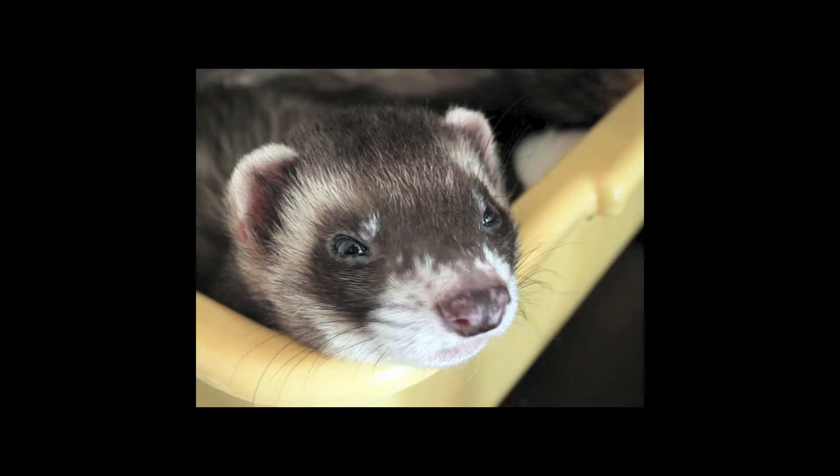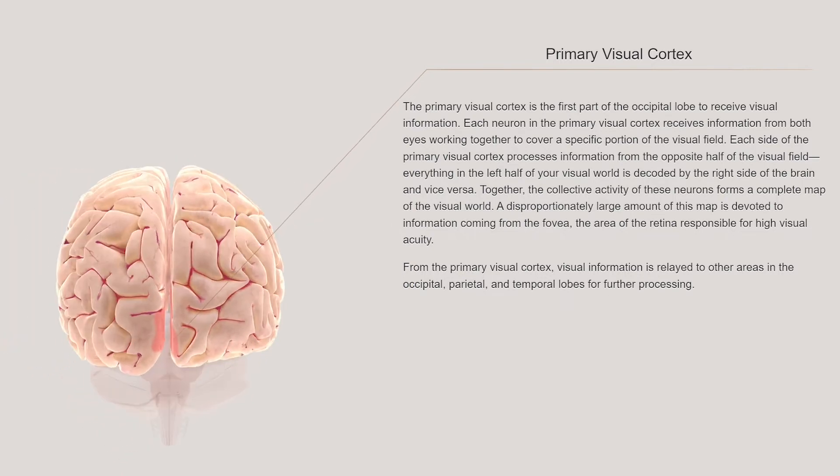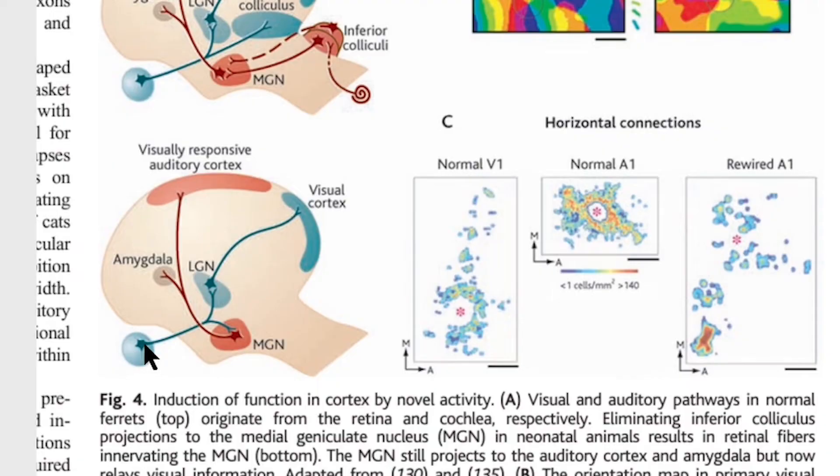Now, what about something less trivial than handedness? Can you rewire your brain to hear with your eyes or see with your ears? To address this question, I want to talk about an experiment carried out on ferrets by MIT researcher Mriganka Sur. He wanted to know if the visual cortex — the part of the cerebral cortex devoted to processing vision — was intrinsically devoted to vision, or if it processed visual information only because that was the type of information it received. Specifically, if you re-routed the nerve going from the eyes through the thalamus to the auditory cortex, would the auditory cortex develop to process visual information and allow the ferrets to still see? The answer appears to be yes, but with important caveats.